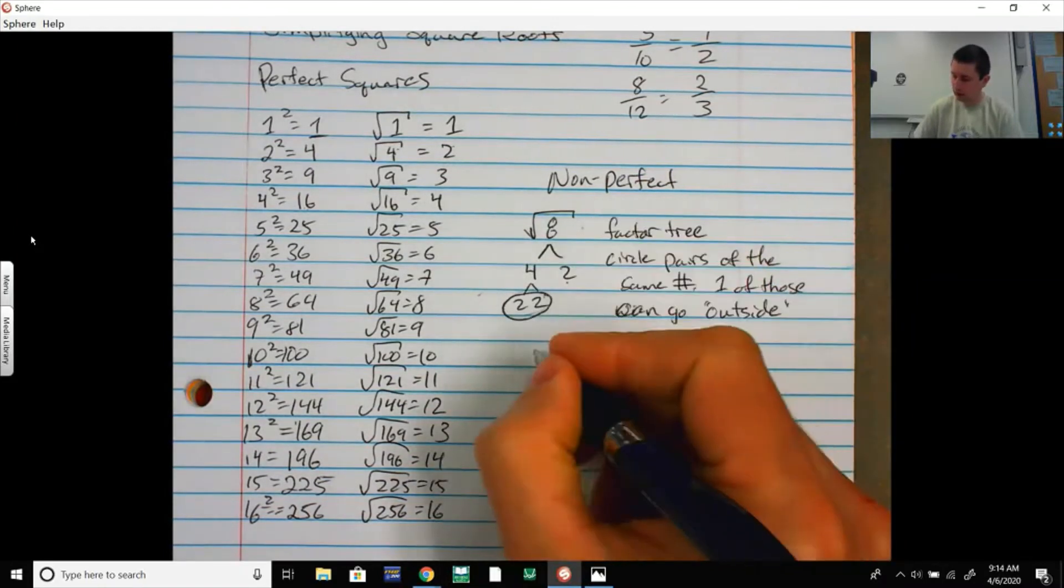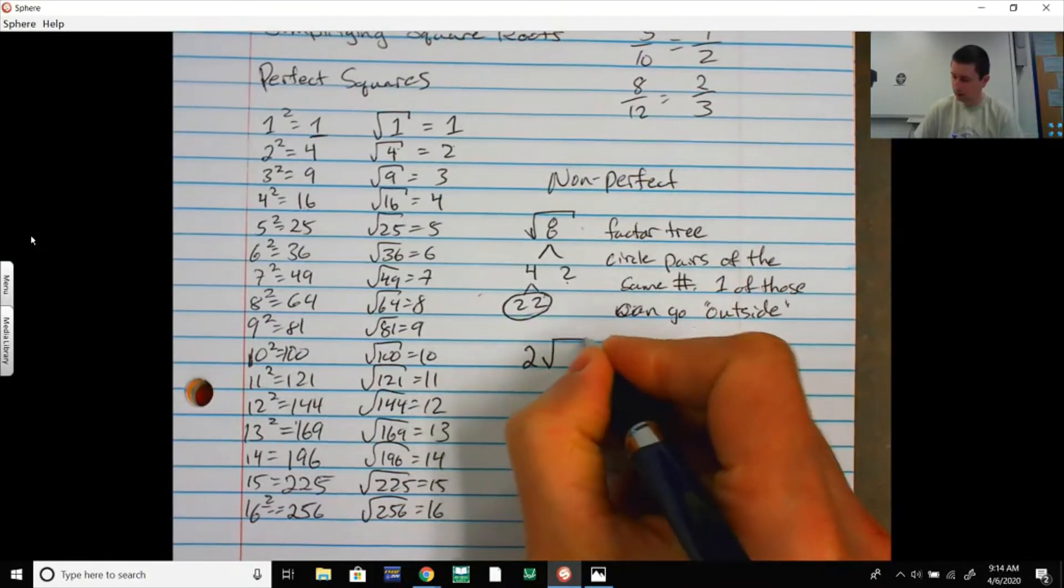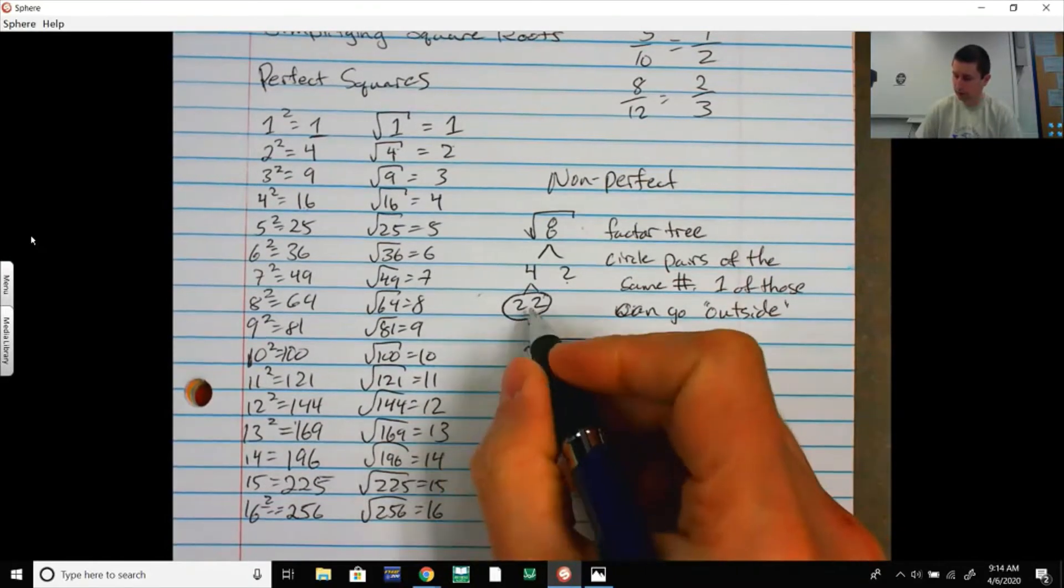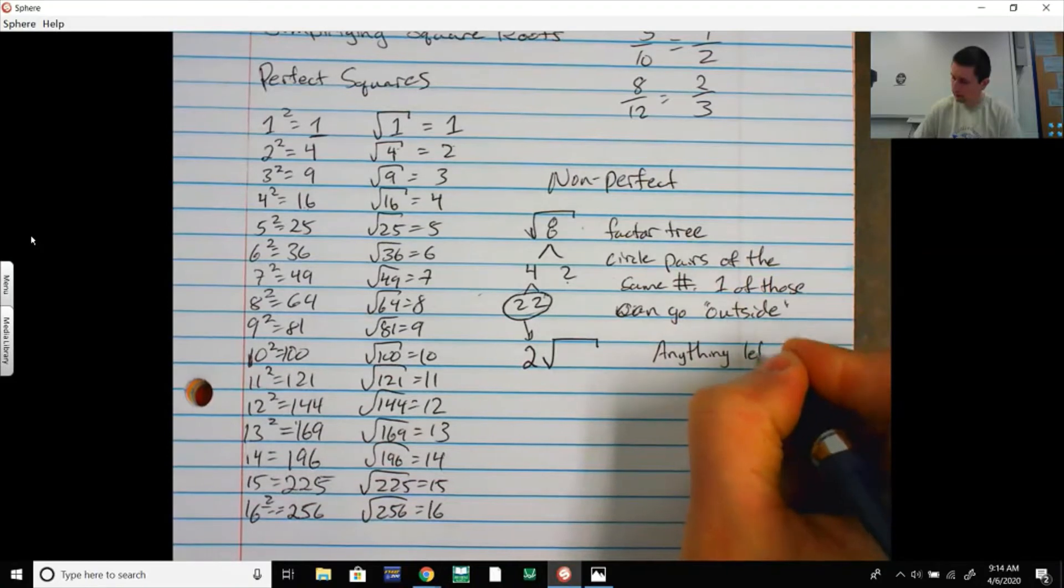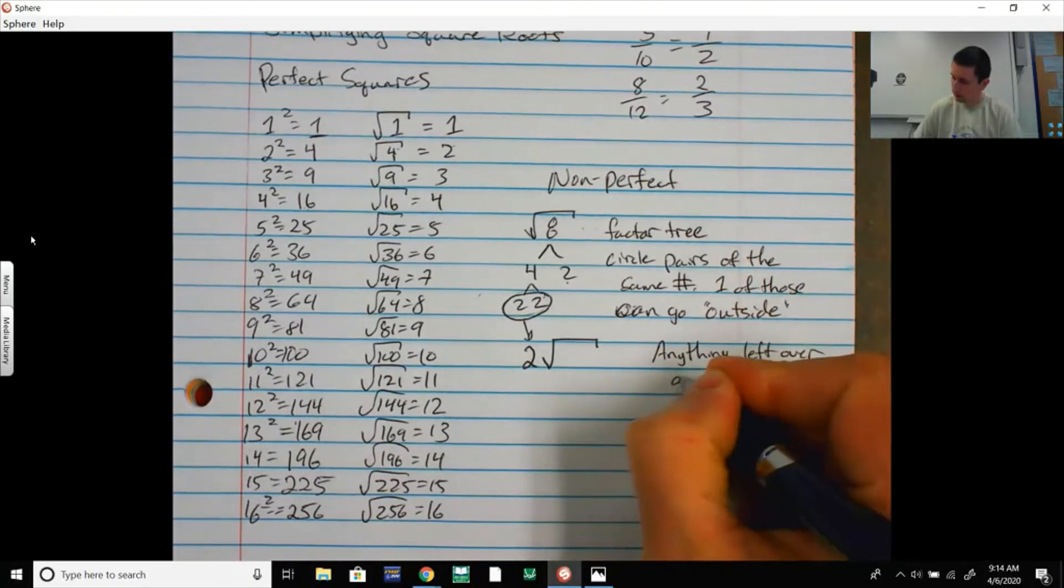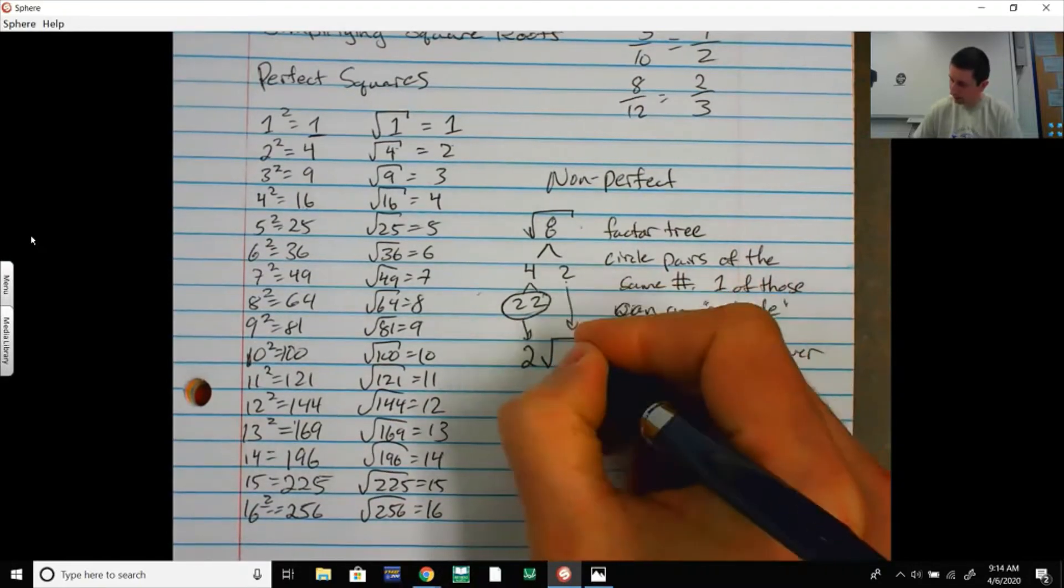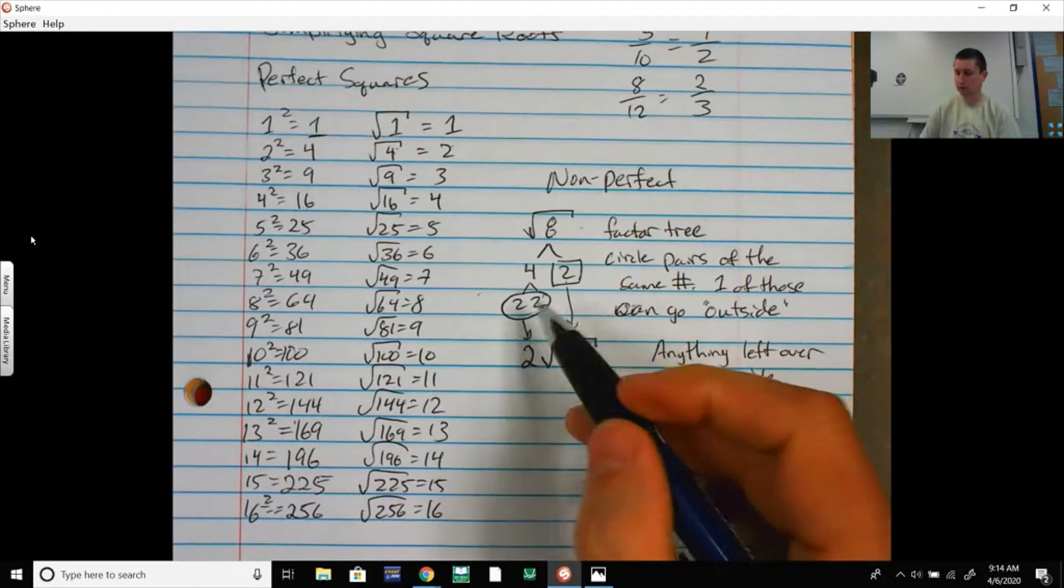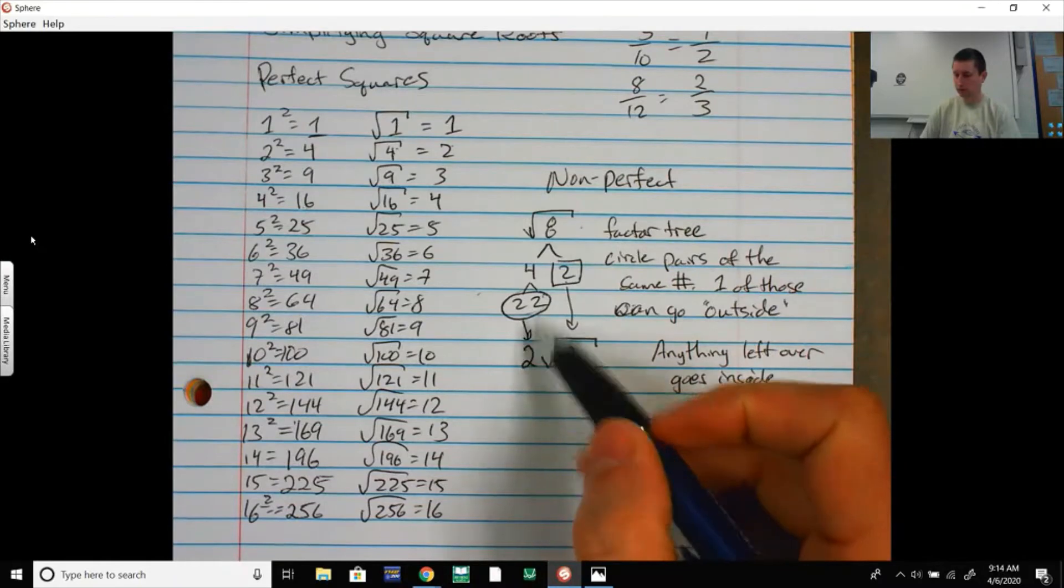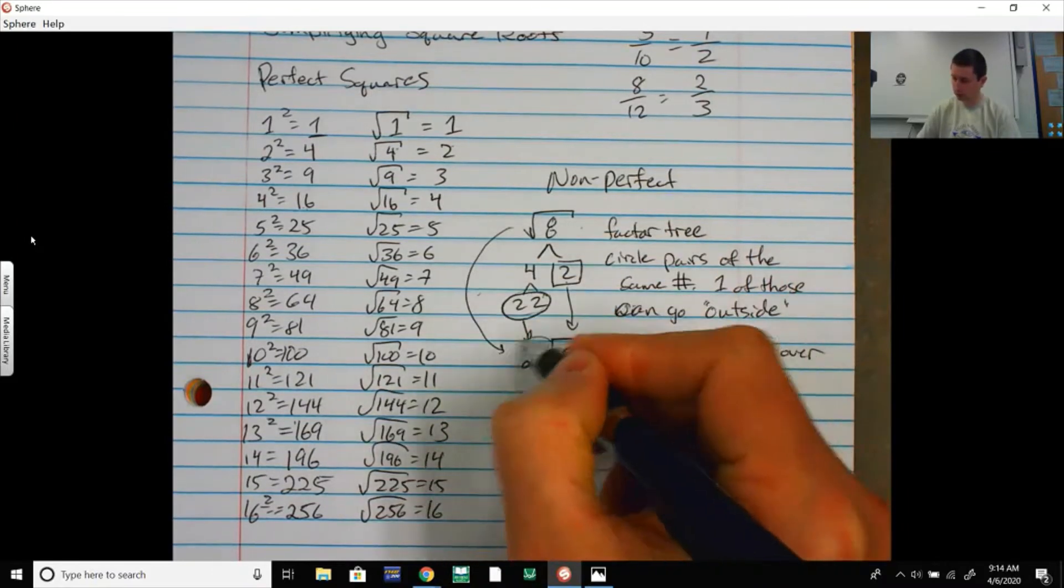And you're going to circle pairs of the same number. So I have a pair of 2s here. I have another 2 here. I could have circled these two, but I just need pairs of numbers. So circle pairs of numbers. One of those can go outside. So if you have a buddy, one can go outside. Here's your square root sign. The 8 is inside right now, it's trapped, it's quarantined. It's stuck inside. Quarantine doesn't mean you have to stay inside. Get outside, play, run, do something active. So 8 is inside. If you have a buddy, you can go outside. So I'm going to put a 2 out here, in front of the square root sign. So there's a 2 outside. Anything left over is going to stay inside. So that 2 has to stay inside. That's left over. So pairs of numbers, if you have a pair, if you have a buddy, you're going to put one number outside. Anything that's left over stays inside. So square root of 8 reduces into 2 root 2. This would be your answer.